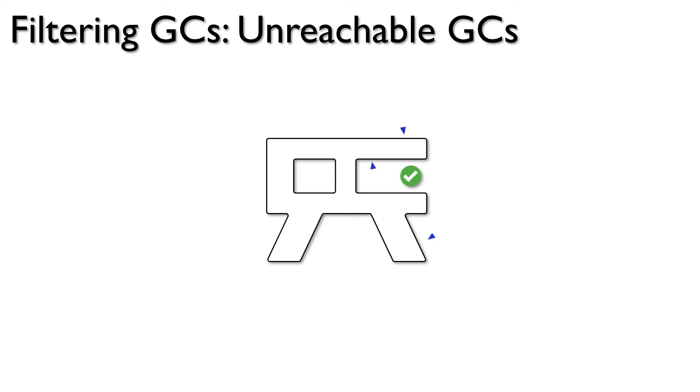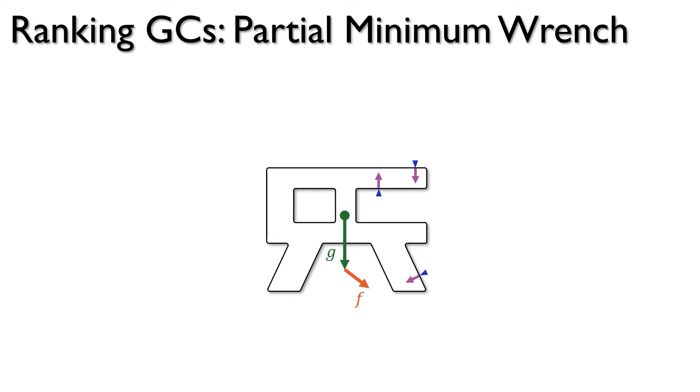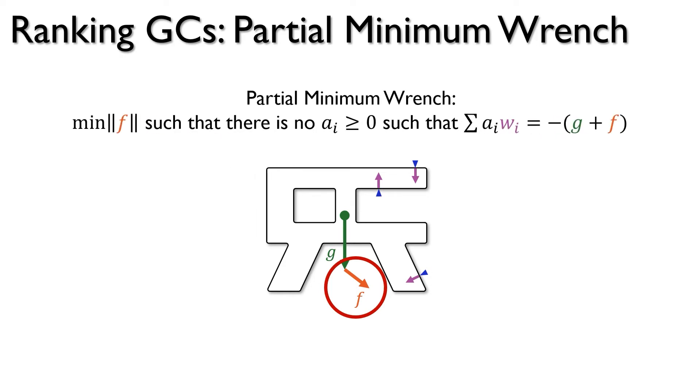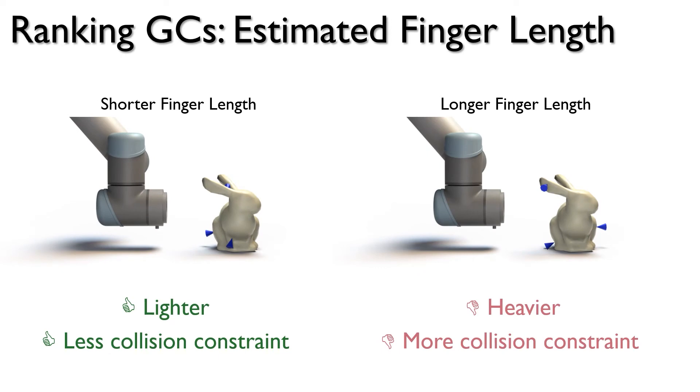Let us now focus on ranking the GCs. Our first ranking metric favors robustness to external disturbances. We use a metric called partial minimum wrench, which finds the minimum external force and torque that would destabilize the object. Larger partial minimum wrench is better. Our second ranking metric favors smaller and lighter gripper designs. GCs whose contact points are closer to the robot arm will have a smaller design footprint and a higher chance of finding a valid insert trajectory because they interfere less with the object. We measure this by computing the length of the non-colliding path from the robot arm to the contact point.